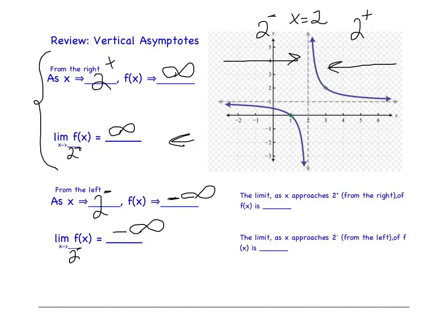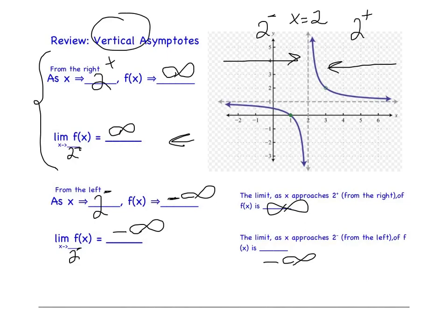The limit as x approaches 2-plus of f of x is positive infinity. And the limit as x approaches 2-minus of f of x is negative infinity — in other words, it keeps going down, it decreases without bound. This is how we describe vertical asymptotes with limit notation.